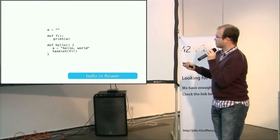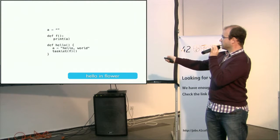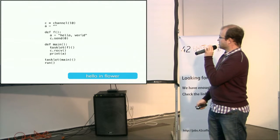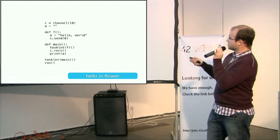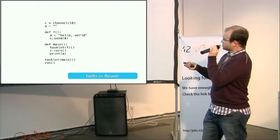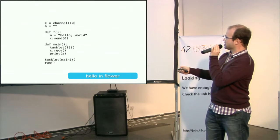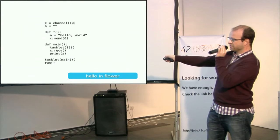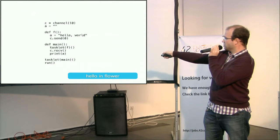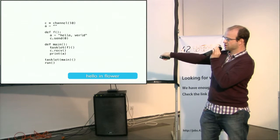The main synchronization between Go Routines is channels — a send on a channel happens before a receive on it. So here is the same example in Flower, inspired by Go. We have A that we set. We have a function that prints A. We set A and put a task in the scheduler. With a channel, we create a channel, set an empty value for A. The function sets A and sends a null value to the channel. In the main function we schedule the function and start to receive on the channel. At this point we go back into the scheduler waiting for the channel to be written, and then we print A.